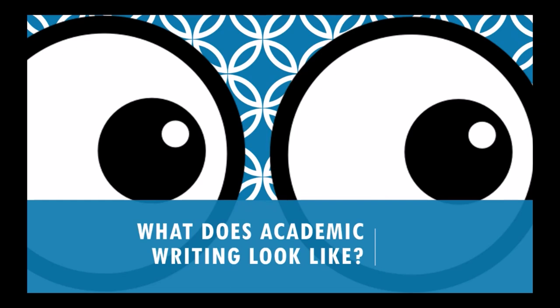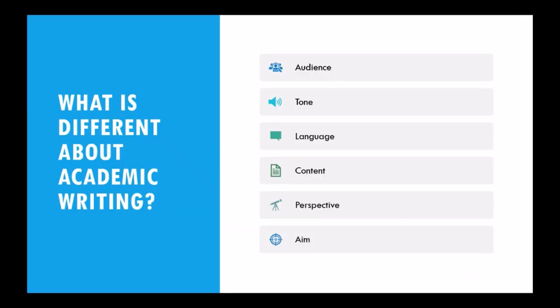Now we will look at what academic writing looks like. As masters, honours, and PhD students, you are expected to write in a particular way using academic — not informal — language. What is different about academic writing? For academic writing, you write for a particular audience, with a particular tone, particular language, the content, the perspective, as well as the aim — all are important. To write effectively, you need to identify who your readers are and take their expectations and needs into account.